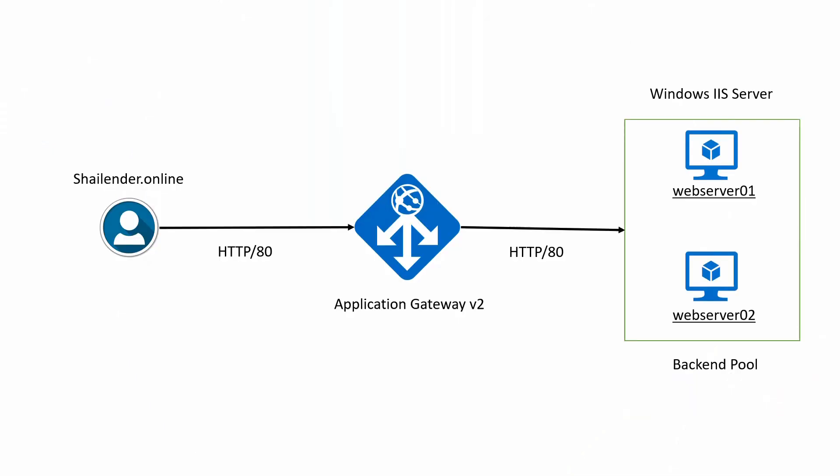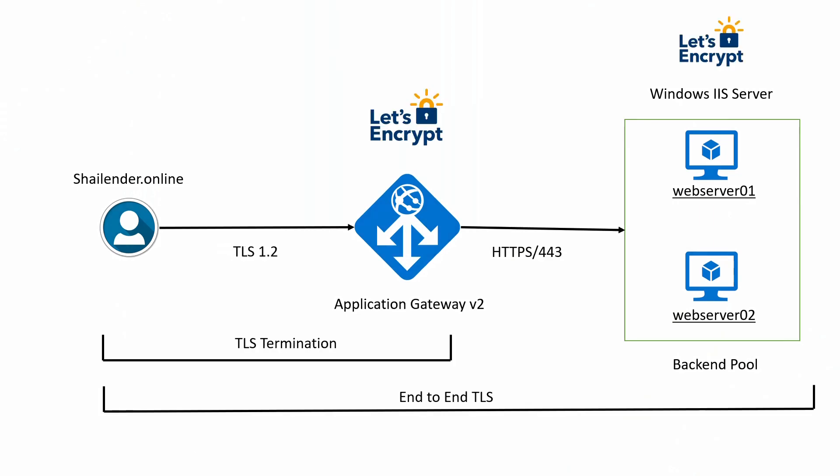The architectural diagram on screen shows the unencrypted flow of traffic from the user to the backend servers, where the application gateway is in the middle. In this lab, I'll be using the custom domain shalanda.online. The user hits shalanda.online in the browser, traffic goes unencrypted using HTTP, and the application gateway forwards the traffic to the web servers using HTTP as well. In this lab, we are going to set up end-to-end TLS encryption where traffic from user to application gateway and from application gateway to the web server will both be encrypted.